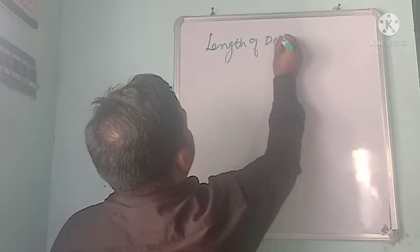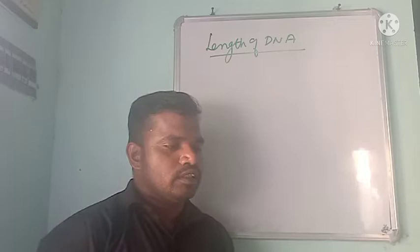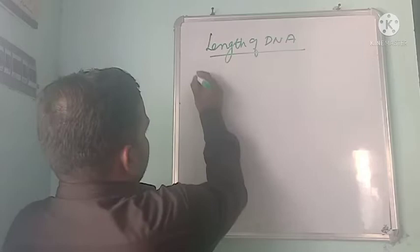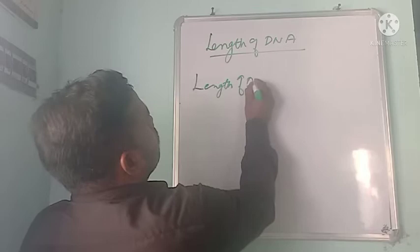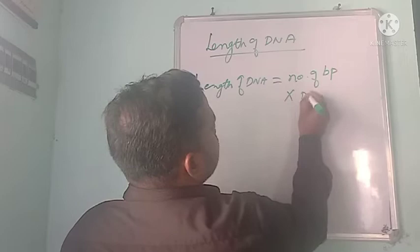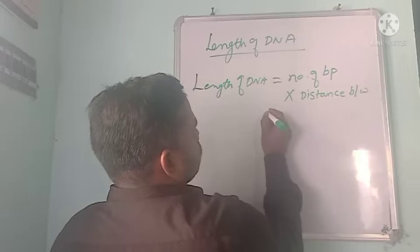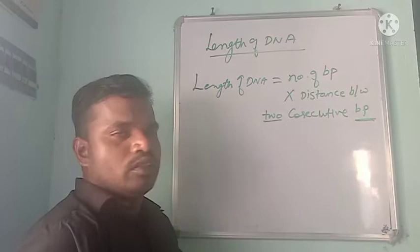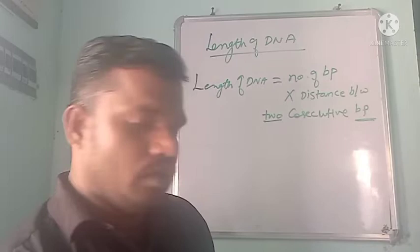The first question is based on the length of the DNA — how to find out the length of the DNA? This is the calculated part, and questions related to this concept will be answered in the NEET examinations. The length of DNA can be calculated by knowing the number of base pairs multiplied by the distance between two consecutive base pairs.